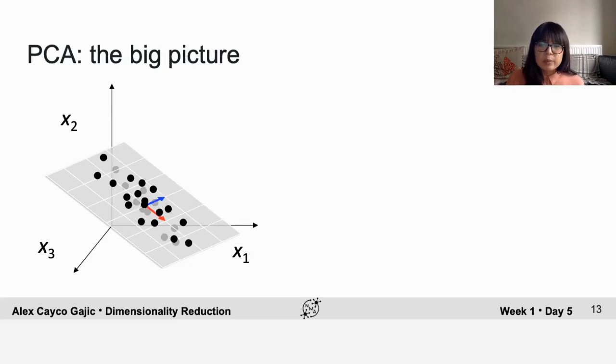So to give you the really big picture view of the message for today, typically in neural data, even when we're recording from very large numbers of neurons, we don't observe that the neural activity patterns are uniformly distributed across the entire vector space of possible activity patterns.